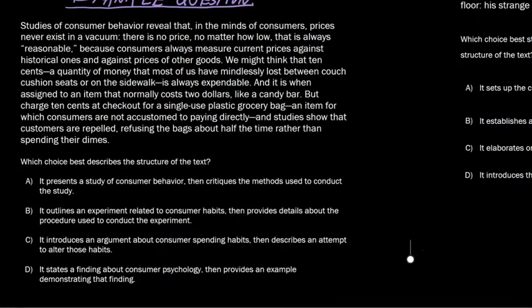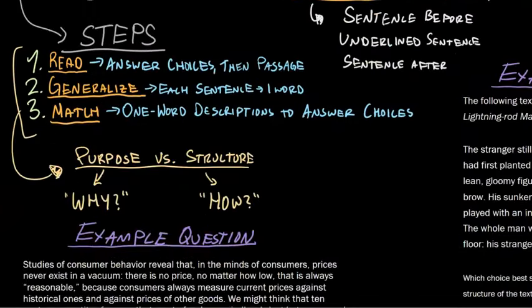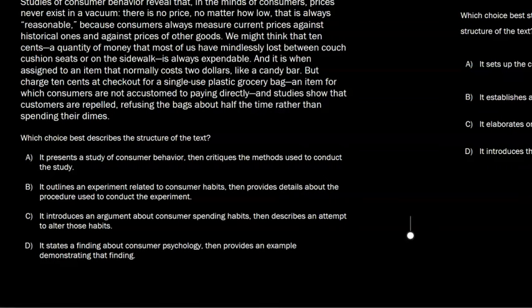Alright, so let's look at an example question here. Studies of consumer behavior reveal that in the minds of consumers, prices never exist in a vacuum. Okay, I'm gonna go back and read the answer choices now. So which choice best describes the structure of the text? We know that it's gonna be one of these problems here. It's the exact same wording. So A, it presents a study of consumer behavior then critiques the methods used to conduct the study. B, it outlines an experiment, then it provides details. And again, you're gonna see a lot of these keywords when you do one of these questions. So I'm just gonna kind of underline the keywords here.